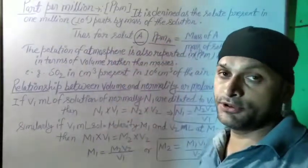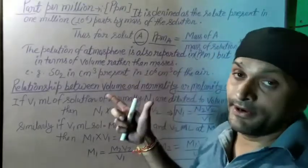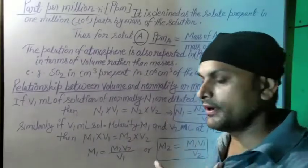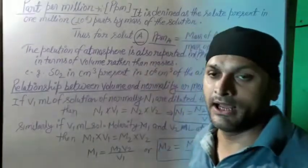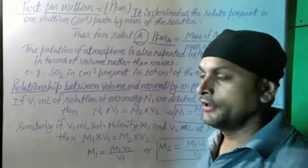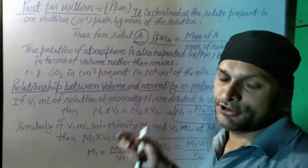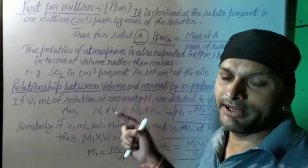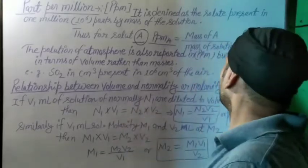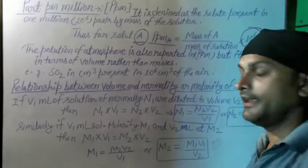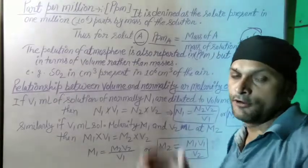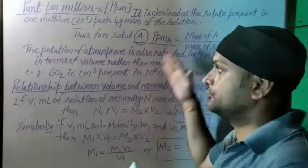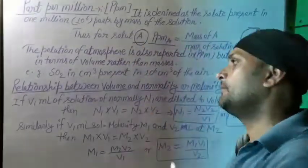That means the solute which is present in one million parts by mass of the solution. Suppose we take sulfur dioxide — we take the mass of sulfur dioxide, which is its unit mass, and divide it by the mass of the solution, then multiply by one million, that is 10 to the power 6. Hence we get the part per million of that unique solute which is present in that solution.